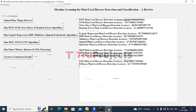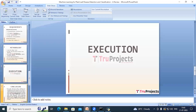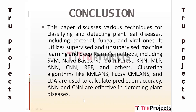Close this graph. The conclusion is that this project explores techniques for classifying and detecting plant leaf diseases using supervised and unsupervised machine learning and deep learning methods. It also uses clustering algorithms like K-Means, Fuzzy C-Means and LDA to calculate prediction accuracy, highlighting the effectiveness of ANN and CNN in detecting plant diseases.